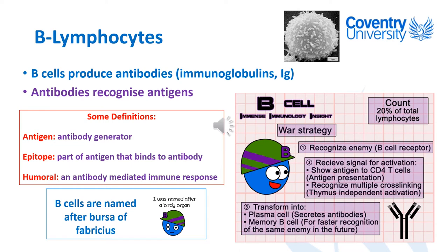B cells make up about 20% of all the lymphocytes within our immune cells. Through receptors on their cell surface, they can recognize an antigen and then start to produce antibodies specific for that antigen. When those antibodies move around the body and come into contact with that pathogen, they'll bind to it and send a signal to other cells of the immune response to cause destruction of that pathogen.